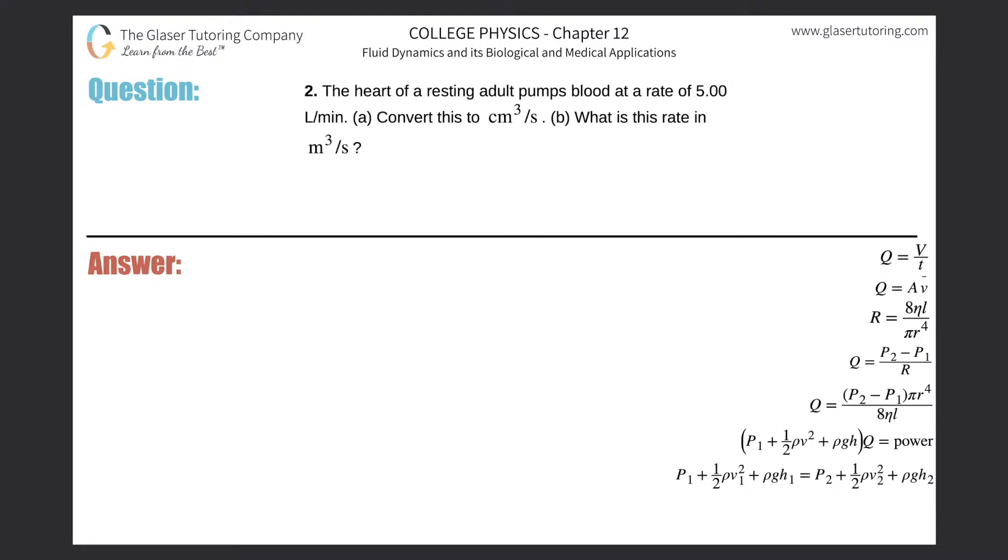Number two: The heart of a resting adult pumps blood at a rate of five liters per minute. Convert this to centimeter cubed per second. Let's write it down - we got five liters per one minute, and we're asked to convert this into centimeter cubed per second.